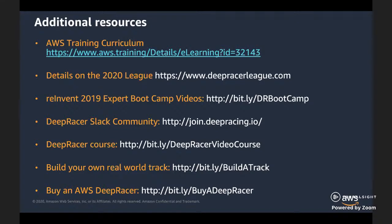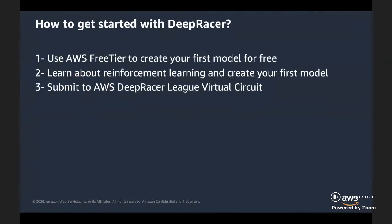To get started, you'll just need to create an AWS account if you don't have one yet. When logging in for the first time, you'll be able to use the free tier for DeepRacer, which is equivalent to about 10 hours of training — enough to create and train your first models for free. Then let yourself be guided through the console where you'll craft your reward function and train your first model. You can then submit automatically to the virtual league — it's completely free — and get a chance to win a car, swag, a trip to re:Invent, and bragging rights.